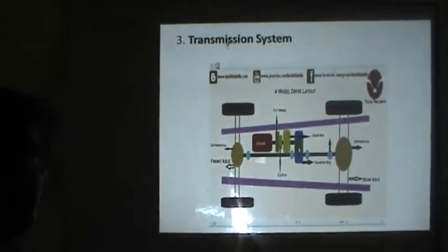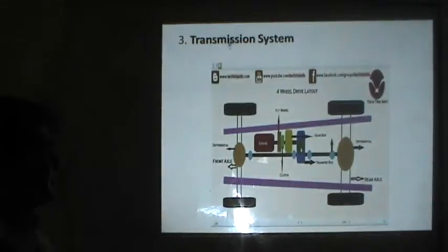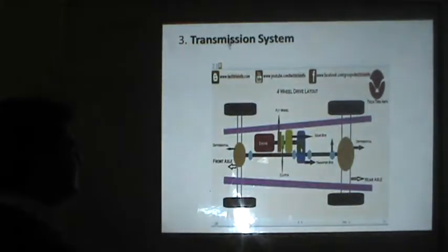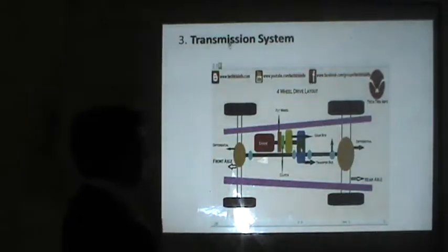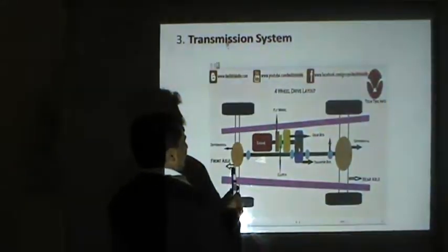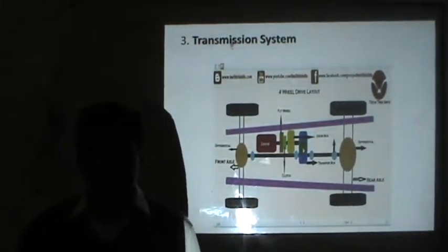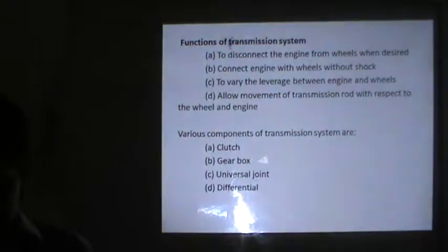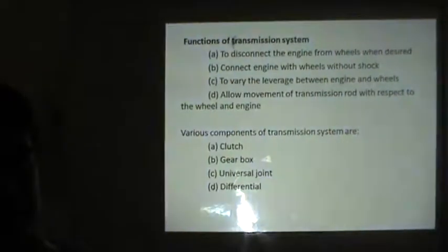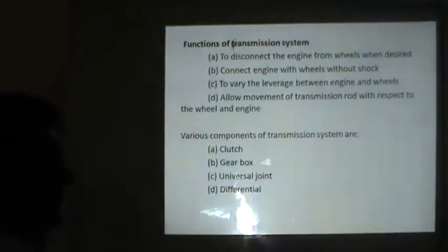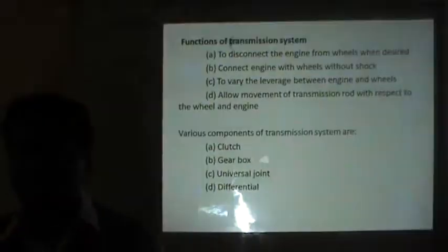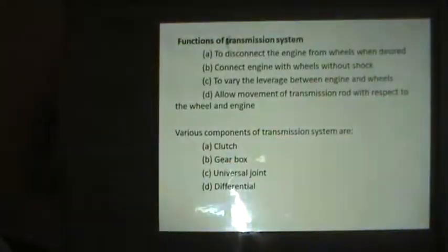The third major component is the transmission system, whose purpose is to transmit power from the power plant to the wheels. Components of the transmission system include the clutch, gearbox, propeller shaft, and differential gears — which provide differential power to both wheels. A key function of the transmission system is to disconnect the engine from the wheels when desired. Pressing the clutch pedal disconnects the power from the engine to the wheels, allowing you to shift gears or change torque.